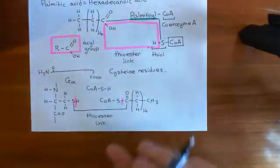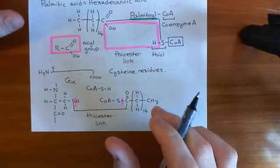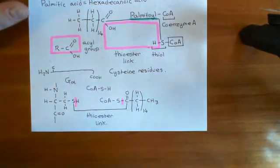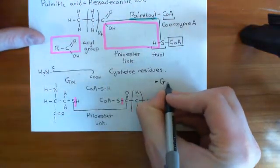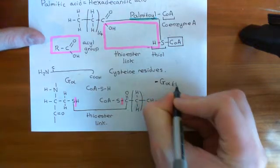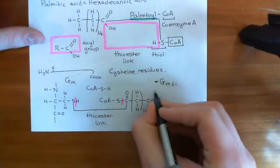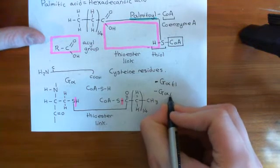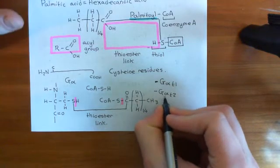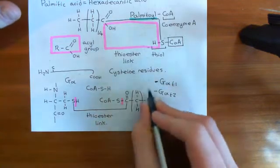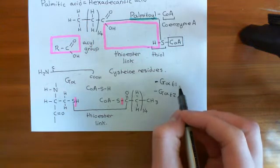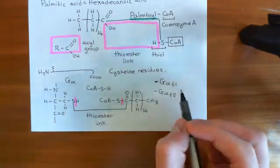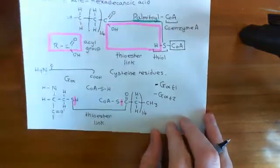S-palmitoylation occurs in nearly all G-alpha subunits. There are two exceptions: the transducin alpha subunits — G-alpha T1, the rod transducin alpha subunit, and G-alpha T2, the transducin alpha subunit in cone cells. These two do not get palmitoylated; they're going to get a different lipid modification, which is known as N-myristoylation.